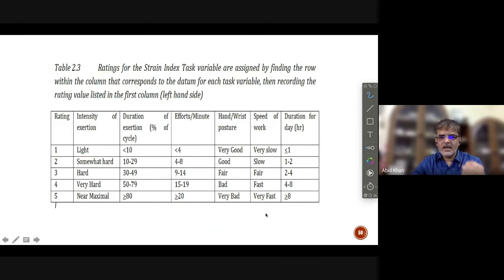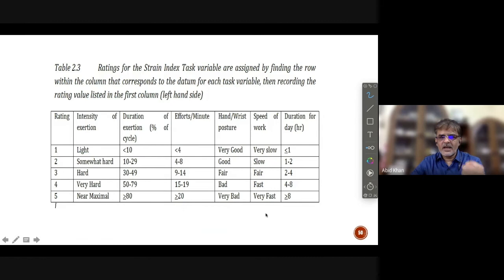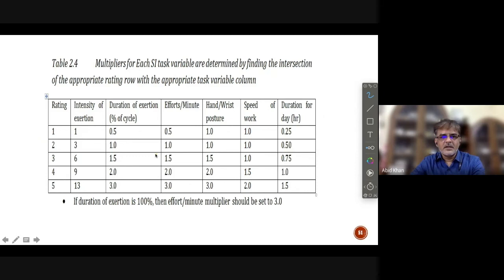And what are these? We see here, these weightages we call as multipliers. And with respect to each rating from 1 to 5, we have a respective multiplier value regarding every variable. And those are presented in the next table which we see over here.